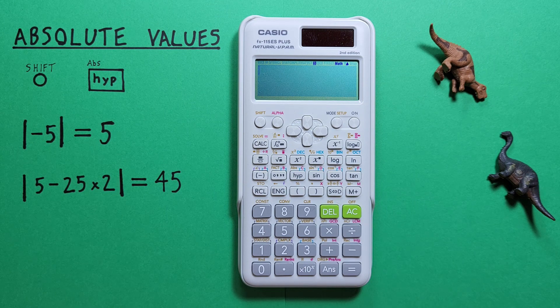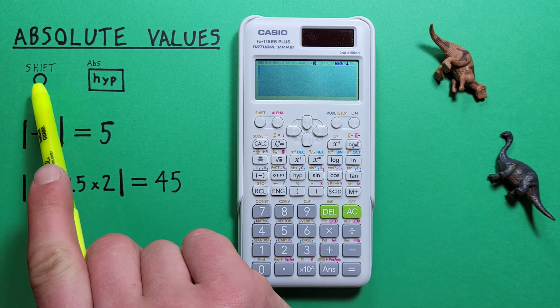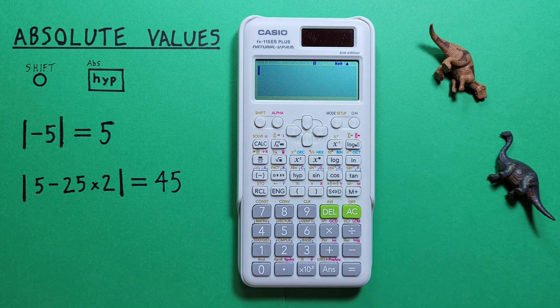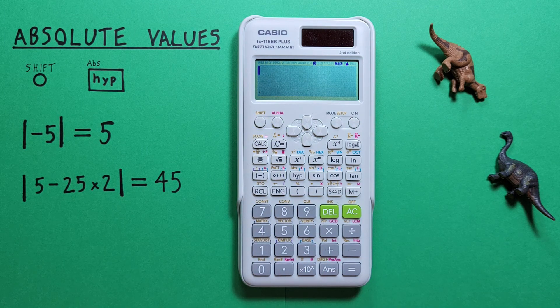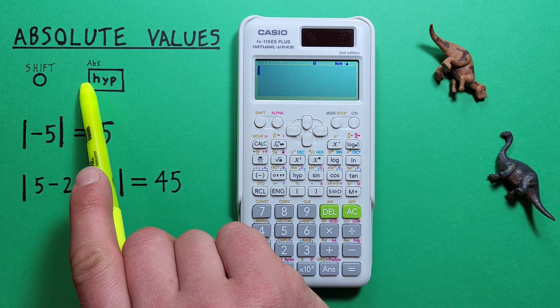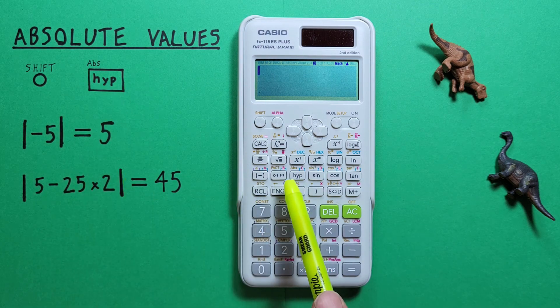To do that we'll use the shift key that looks like this located here, as well as the HYP or hyperbolic key with the shift function of ABS or absolute that looks like this located here.